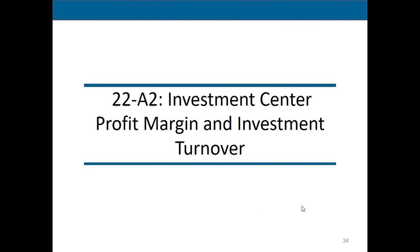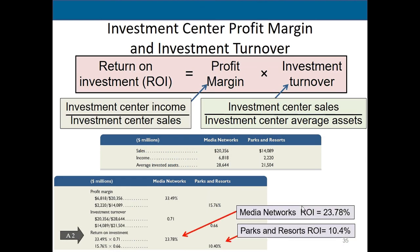We can also break ROI into profit margin multiplied by investment turnover. Profit margin is investment center income divided by sales, and investment turnover is investment center sales divided by investment center average assets. This is just another way to measure and compare investment centers on the same basis to determine which is performing better.